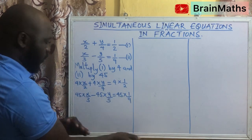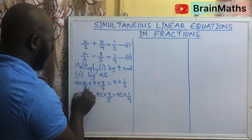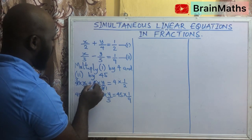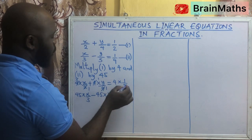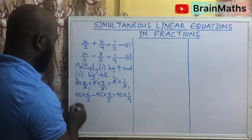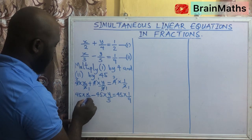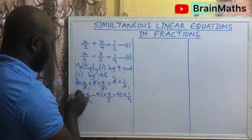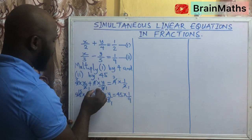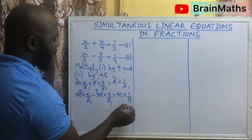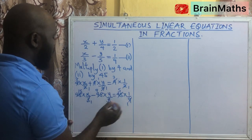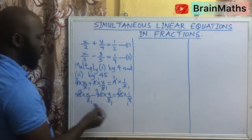So when you simplify each of these: 2 into 4 gives 2, 4 into 4 gives 1, and 2 into 4 gives 2. Also for the second one: 3 into 3 is 1 and 3 into 45 is 15; 5 into 5 is 1 and 5 into 45 is 9; 9 into 9 is 1 and 9 into 45 is 5. So when you bring all this together...